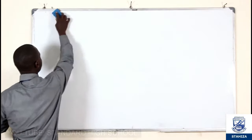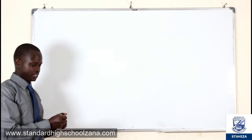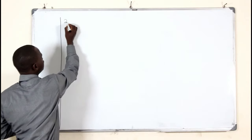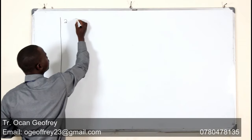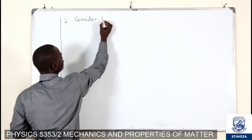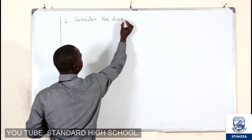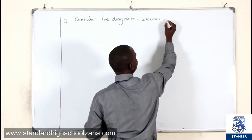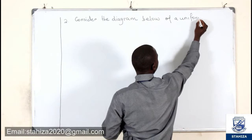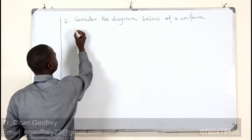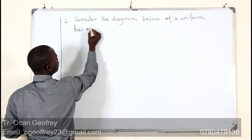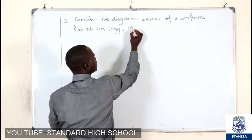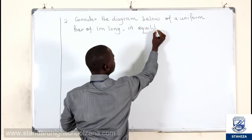So today — example two. Consider the diagram below of a uniform bar one metre long. This bar is in equilibrium under the action of very many forces acting on it.